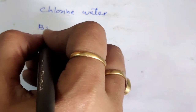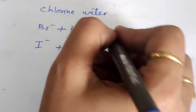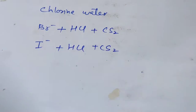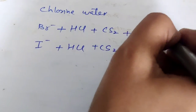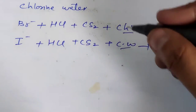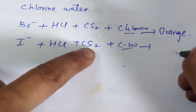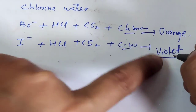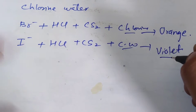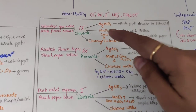The chlorine water test is used to differentiate bromide and iodide. Take an aqueous solution of the salt — iodide or bromide — add HCl, then add 2 mL of carbon disulfide, then add chlorine water. If the carbon disulfide layer turns orange, the salt contains bromide. If the carbon disulfide layer turns violet, the salt contains iodide. This test can be performed for both Br⁻ and I⁻.